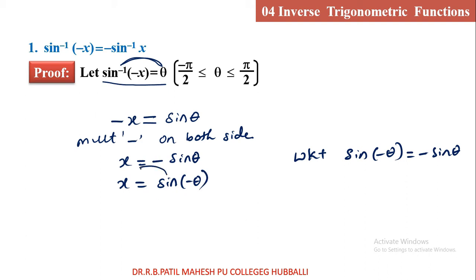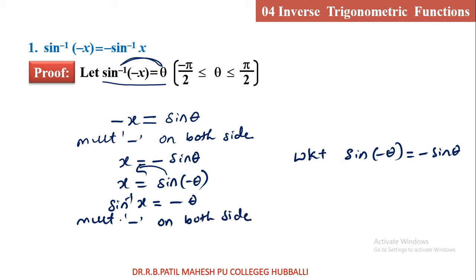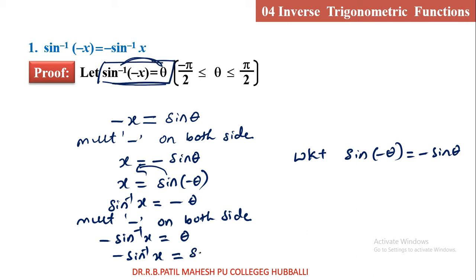Taking sin to the left side gives sin inverse x equal to minus theta. Multiplying minus on both sides: minus sin inverse x is equal to plus theta, since minus into minus is plus. What is the theta value? I took theta as sin inverse of minus x. So replacing theta with sin inverse of minus x, we prove that sin inverse of minus x is equal to minus sin inverse x.